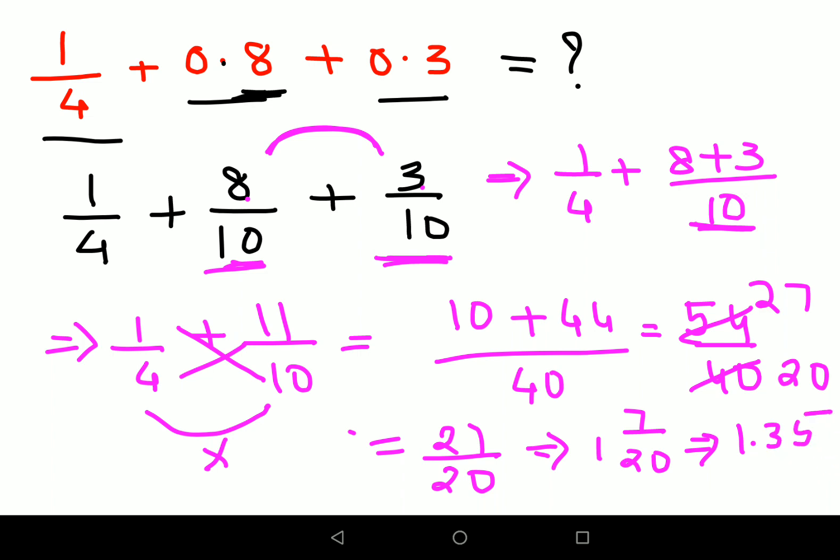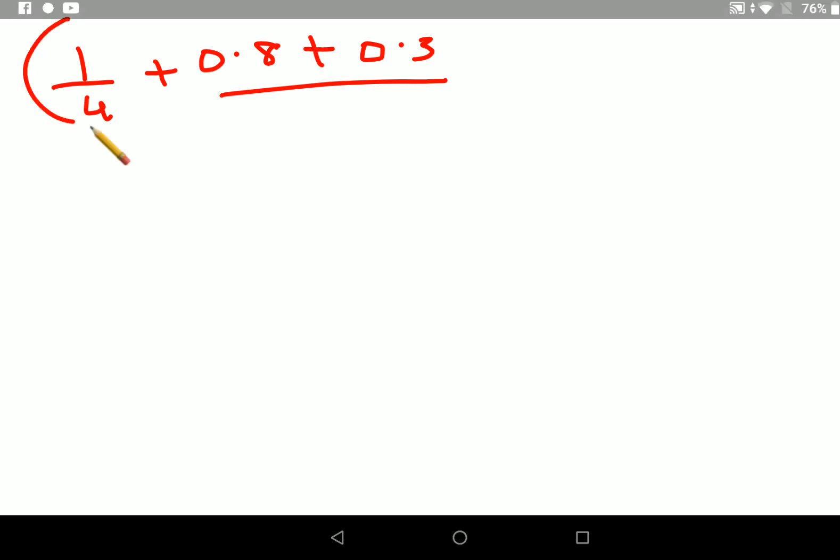Now coming back, like I said I'm going to show you another method of doing this. Let's quickly write this one more time. So we have 1 upon 4 plus 0.8 plus 0.3. Now instead of converting all of these decimals into fractions and then doing the LCM and then the addition and all of that, instead of doing that, just directly convert this fraction into decimal. So 1 upon 4 is nothing but 0.25, and then you have 0.8, then you have 0.3.